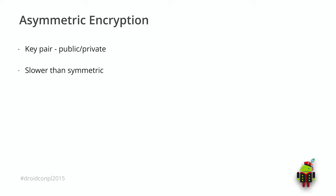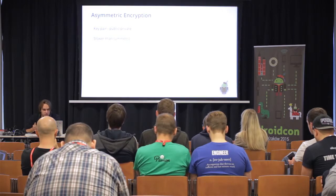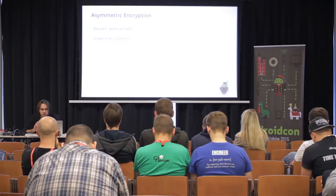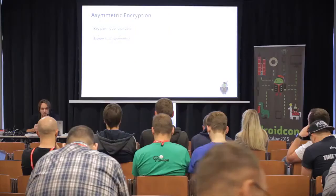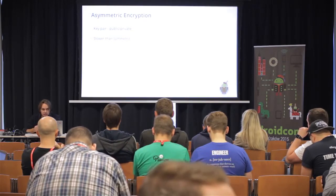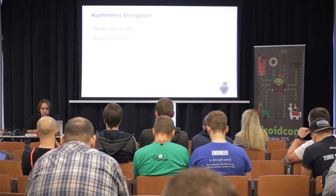For asymmetric encryption: the problem with secret keys is exchanging them over the internet — there is a possibility to steal them. The solution is asymmetric encryption. We create two keys: one is public and the second is private. We send the public key over the internet to the server side — we can give this key to anyone. When the user signs sensitive data with the private key, the one who has the public key can encrypt and validate this data and verify the sender, and vice versa.